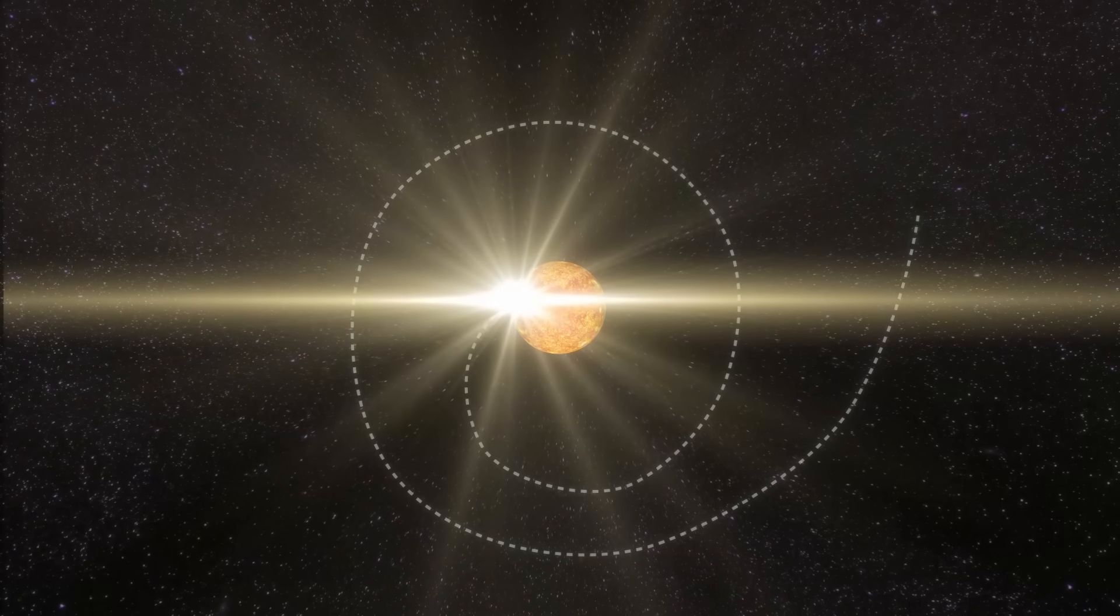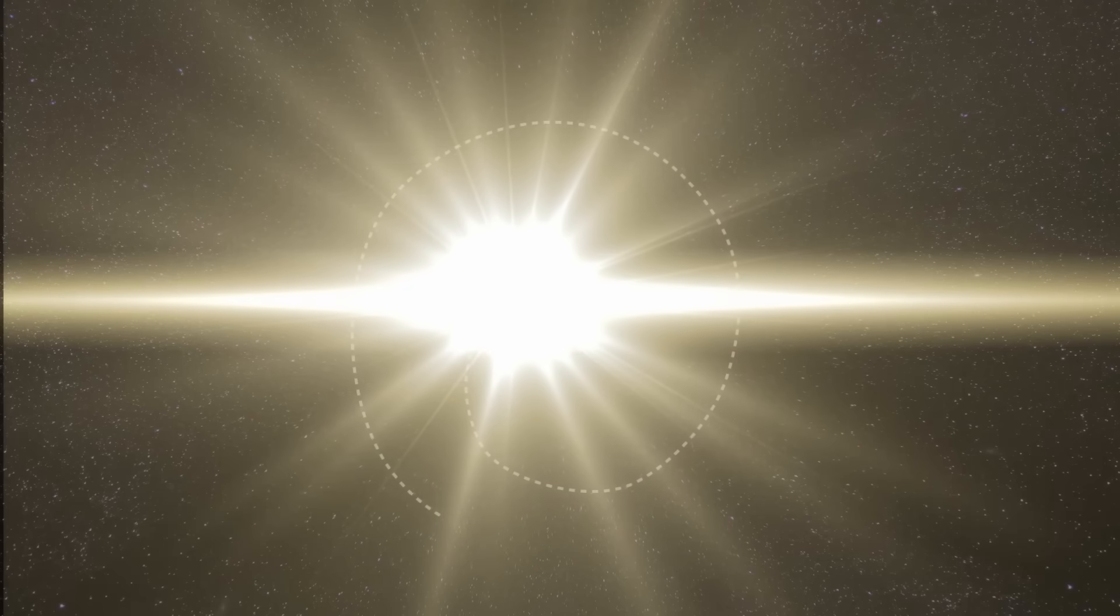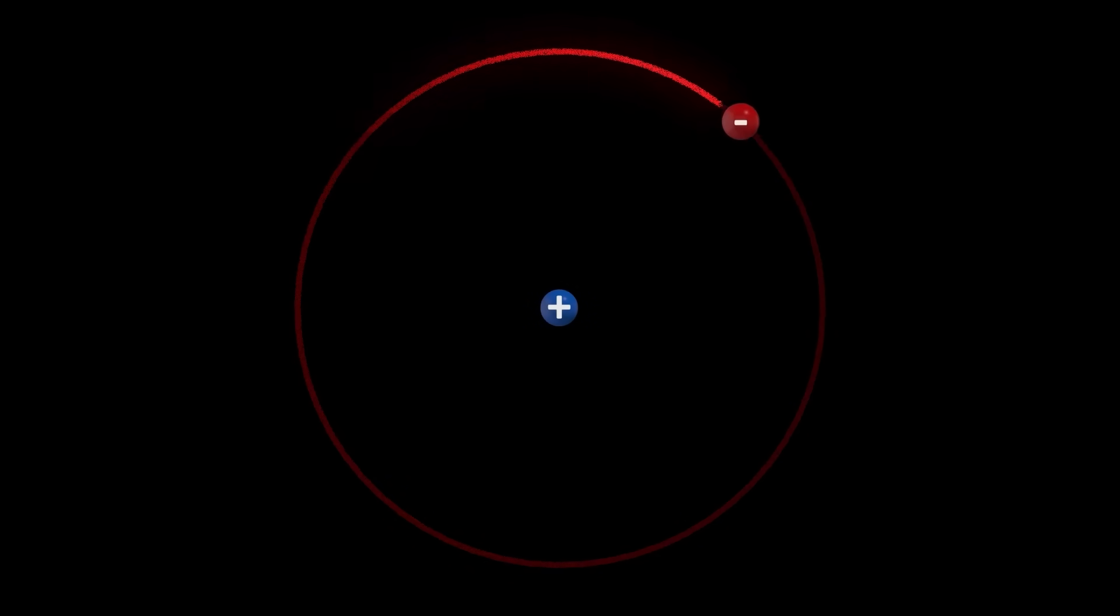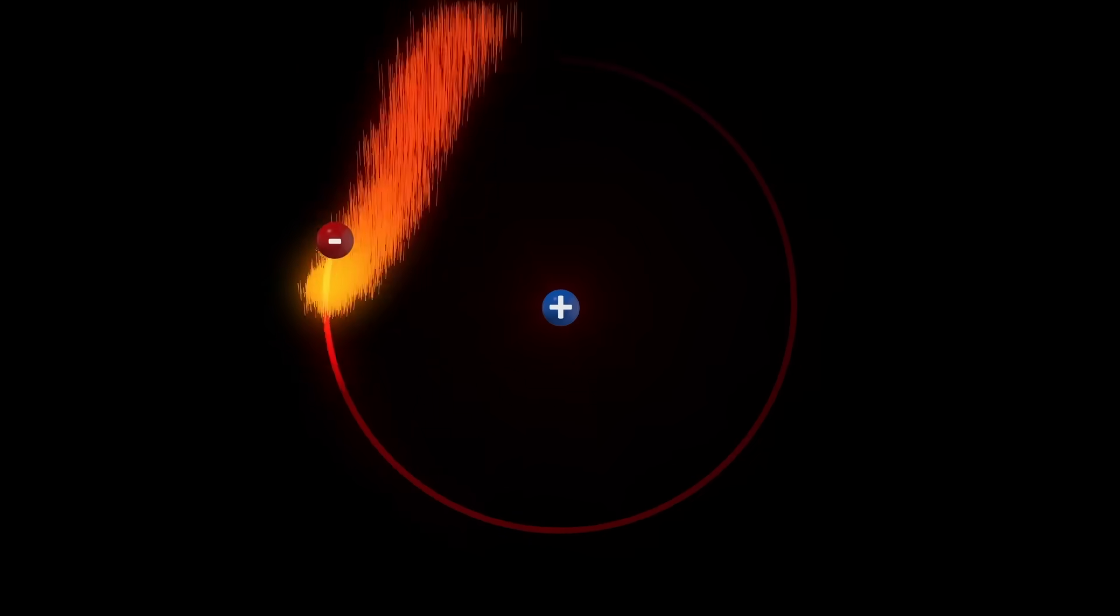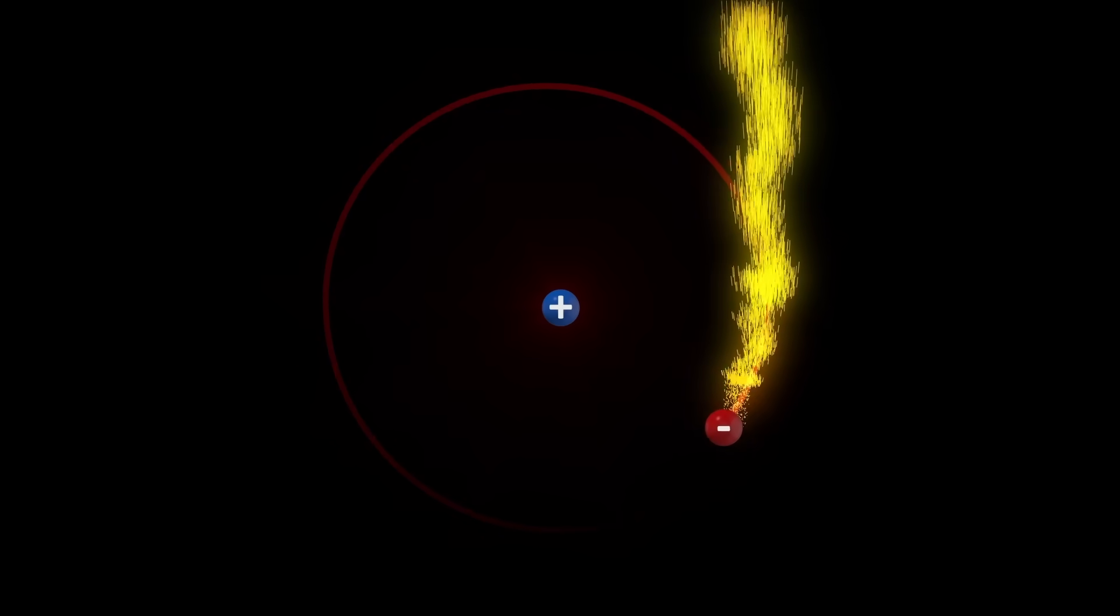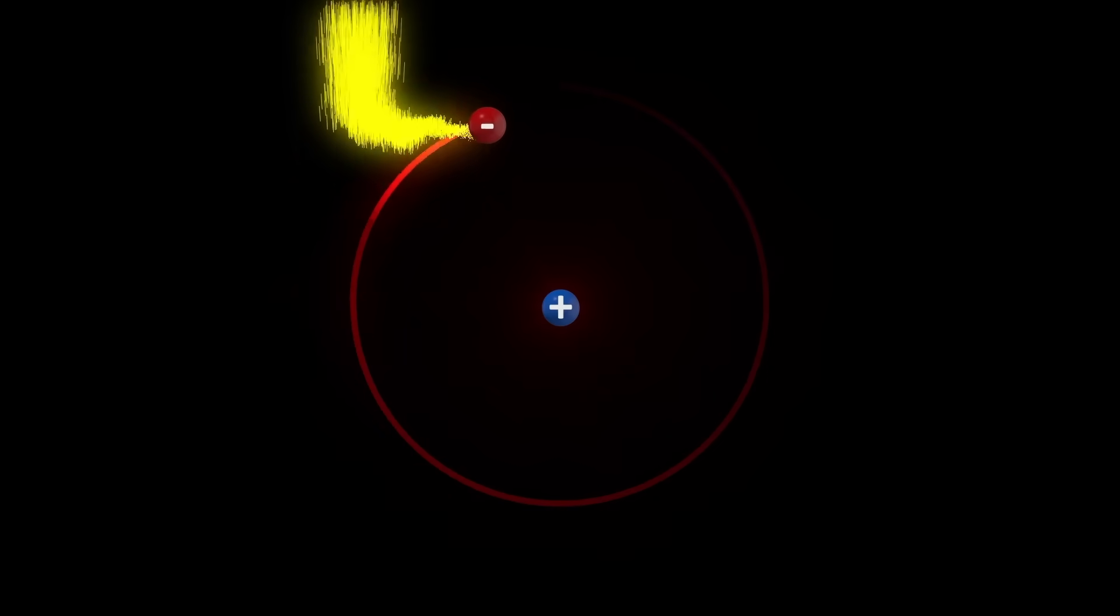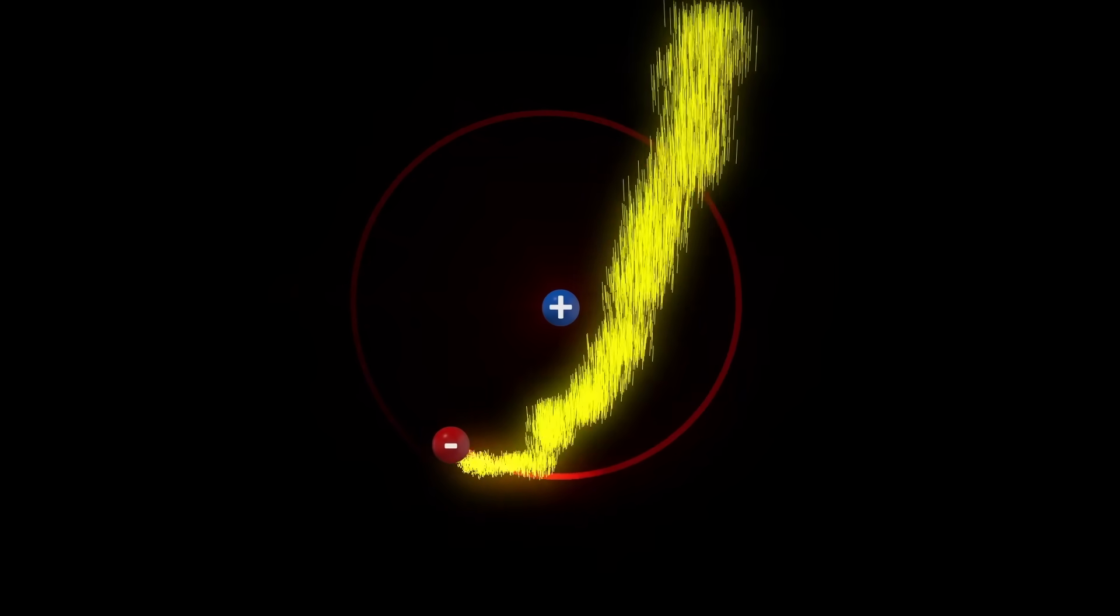Now consider something conceptually similar. An electron orbiting the proton of a hydrogen atom. In this case, we could again try to use Newton's laws to model it. Instead of the attractive force of gravity for the star and planet, the two object's electrical charges keep it bound together. This is where classical mechanics fails, because as we know from Maxwell's laws, an accelerating charge creates electromagnetic radiation. And the constantly changing direction of the electron creates an acceleration.